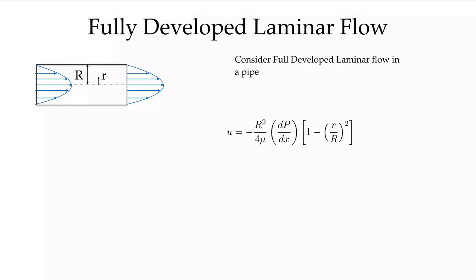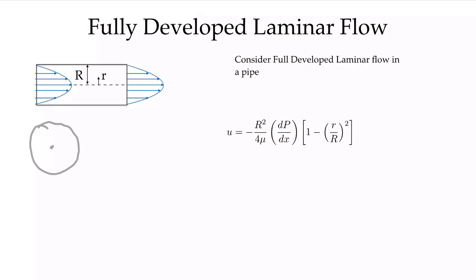So instead of between an infinite slit between two parallel plates, we're looking at an infinite pipe. The geometry we're looking at is the region where we have a fully developed flow — we have the same velocity profile entering our section as we have leaving our section. We have our centerline, and we have a radial coordinate going from the centerline out towards the pipe wall, which is at a radius of capital R. The cross-section of this pipe is a circular cylinder with R going out this way.